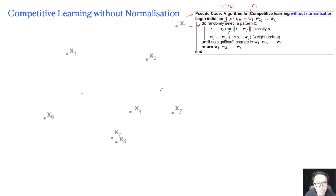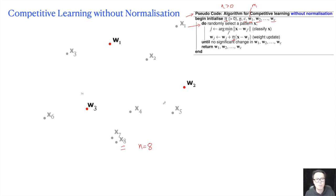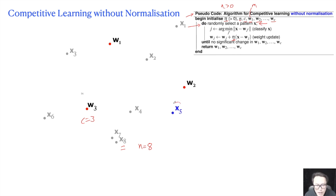For example, we have samples x1 through x8, so the total dataset size is eight. We choose c equal to three — meaning w1, w2, w3 — so we want to divide the eight samples into three clusters. In this example, we randomly pick x5.